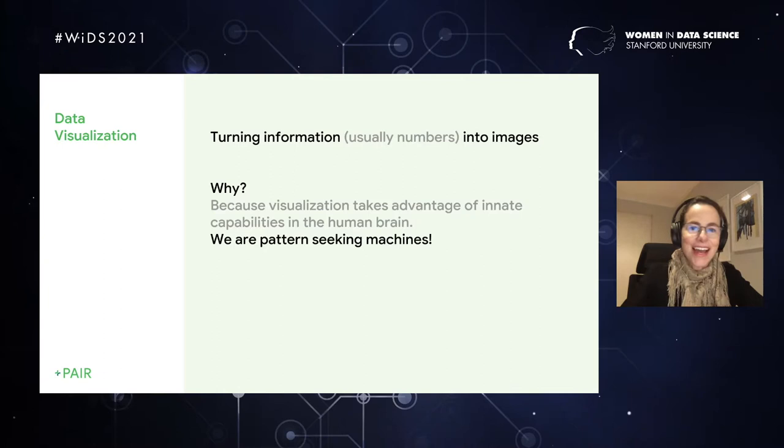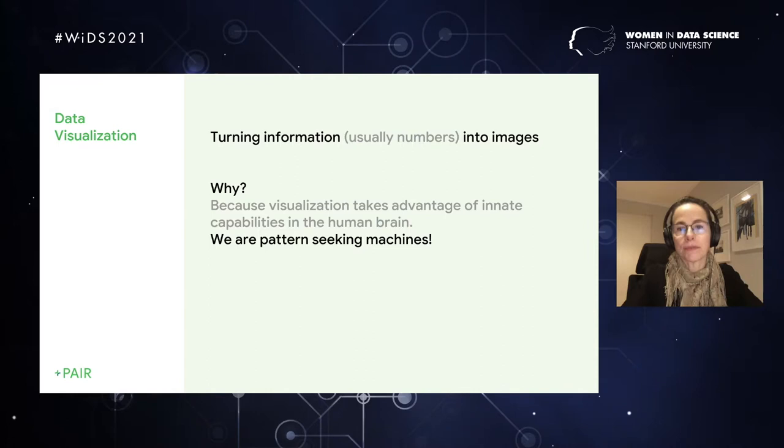Why should we bother with visualizing data? Well, it turns out that we humans are pattern-seeking machines, visual pattern-seeking machines. And so, once we can visualize data, we immediately take advantage of innate capabilities that we have in our brain. It allows our brain to do a ton of computation without us even realizing. It's immediate sometimes. And so, this is why data visualization can be so powerful.